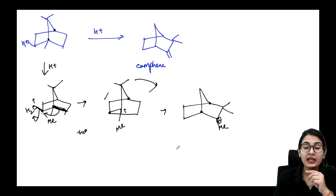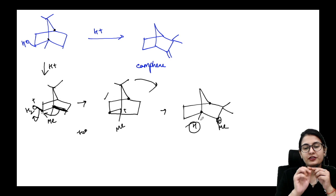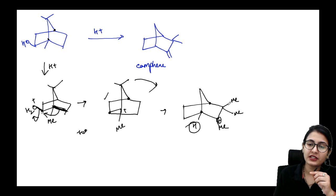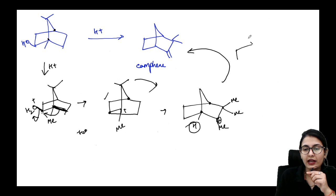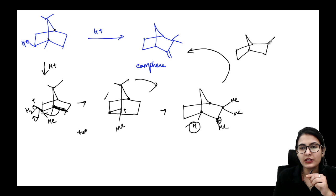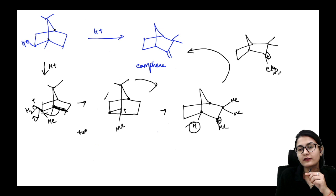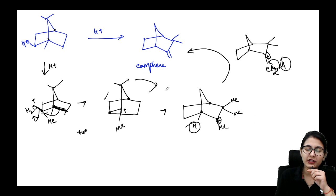This molecule was standing like this; I rotate it to make it fall flat. Since there is a positive charge, you might think of getting a more substituted product, but on this side there is a hydrogen and it would violate Bredt's rule, so you don't get a double bond there. On the other side you have two methyls so there is no point in migrating a methyl there. The only way is to remove this proton to get the less substituted double bond.